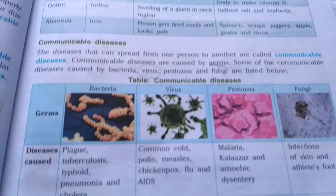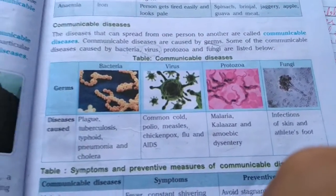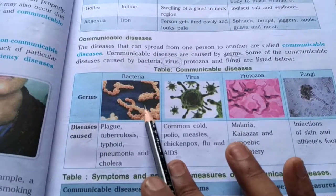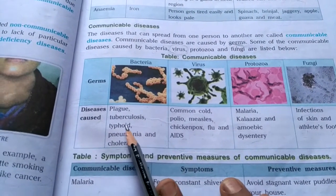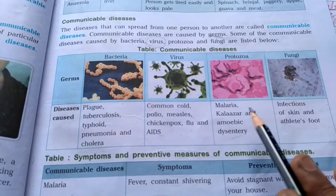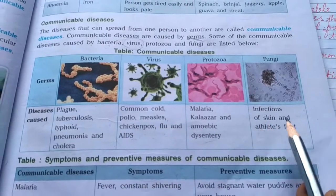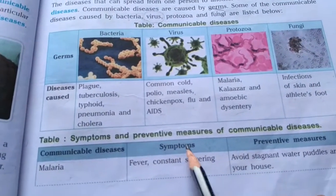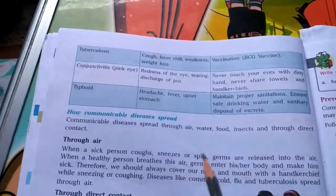There are four types of germs responsible for communicable diseases: bacteria, virus, protozoa, and fungi. Bacteria cause plague, tuberculosis, typhoid, pneumonia, and cholera. Viruses cause common cold, polio, measles, chicken pox, flu, and AIDS. Protozoa cause malaria, kala-azar, and amoebic dysentery. Fungi cause skin infections and athlete's foot. There is also an important table listing communicable diseases, their symptoms, and preventive measures.